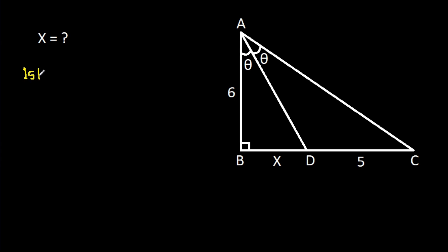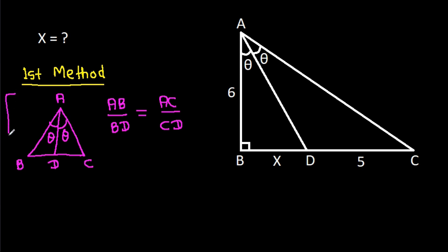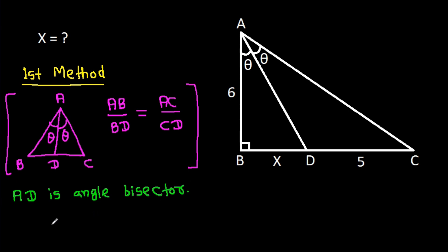The first method: in any triangle ABC, if AD is the angle bisector, then AB over BD equals AC over CD. In this triangle, AD is the angle bisector, so AB over BD equals AC over CD.